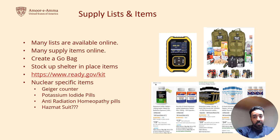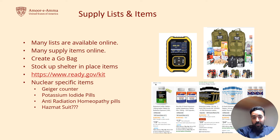Supply lists and items — there are many lists out there from organizations like the Red Cross and FEMA. They're all very much the same, covering food, water, shelter, first aid, and personal hygiene. You can buy all these items online. The point isn't to get stuck looking for the perfect list — the point is to find a list and start stocking up. Stock up your shelter-in-place items and your go-bag items.